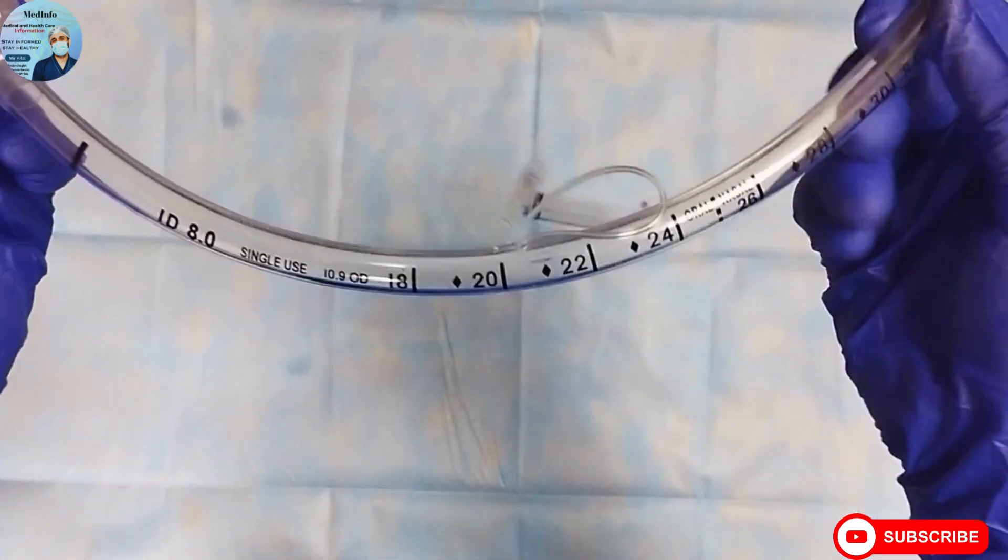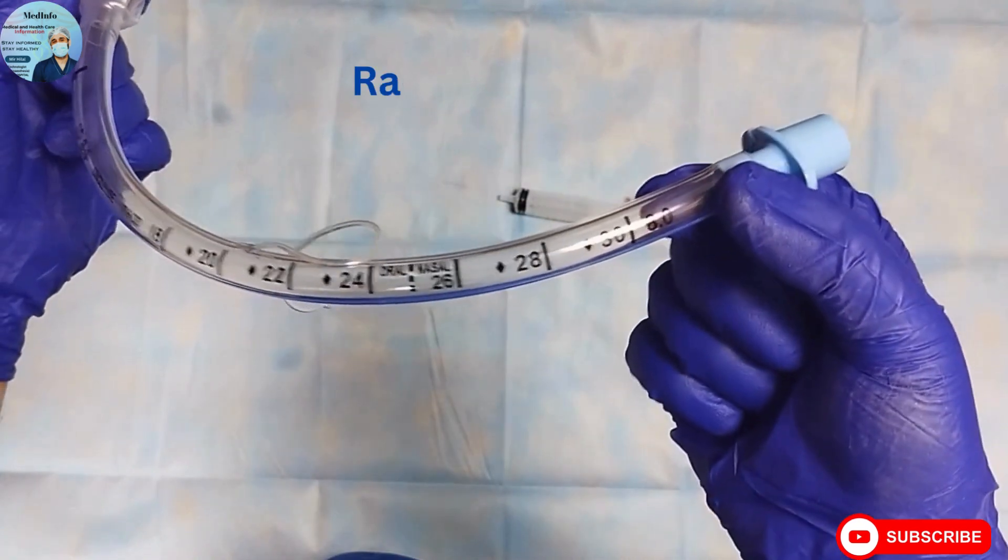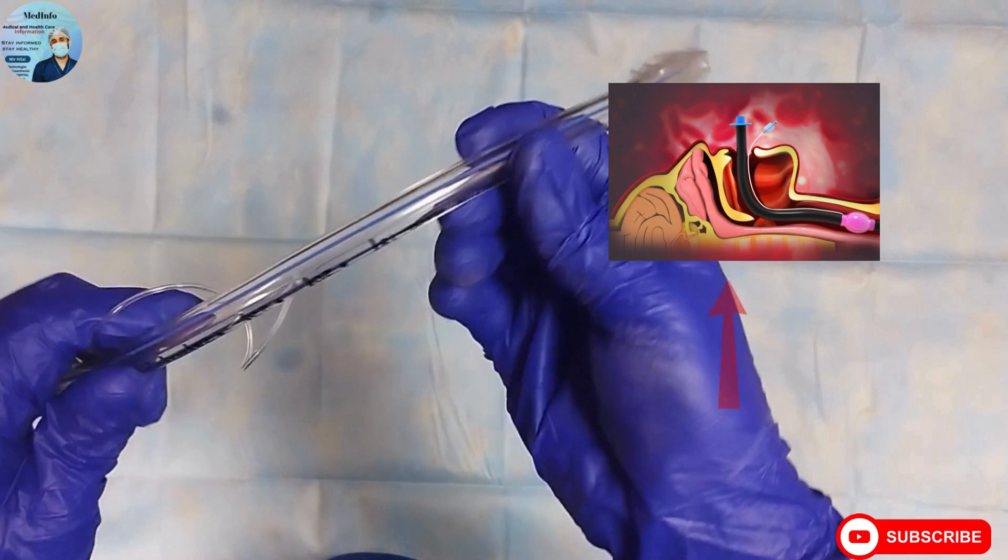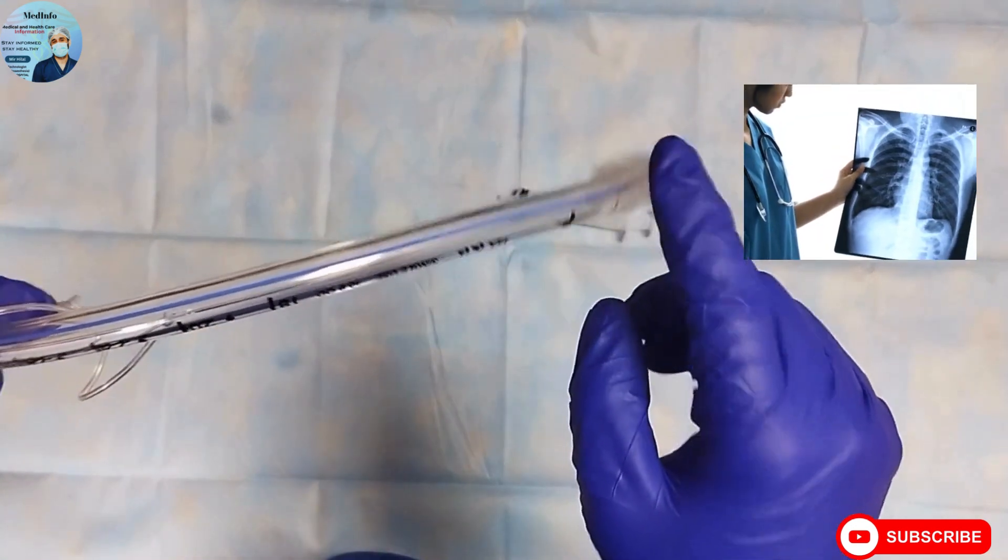Therefore, the secretions, clots, and mist can be easily visualized through it. Here you can see the radio opaque marker, which is used to check the position of endotracheal tube within the trachea after intubation by means of x-ray.